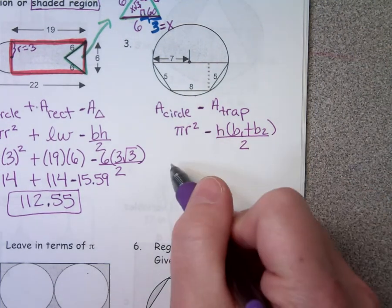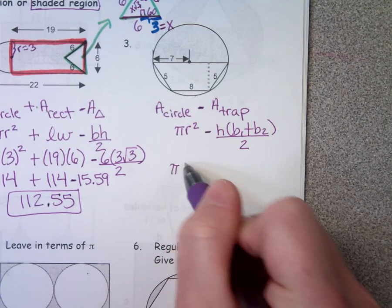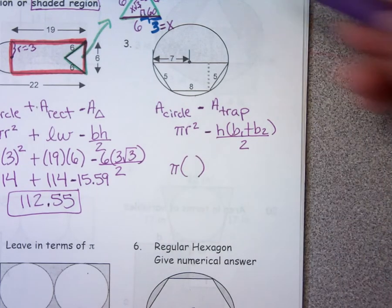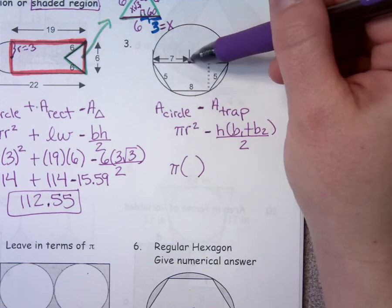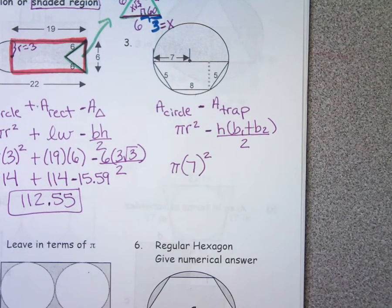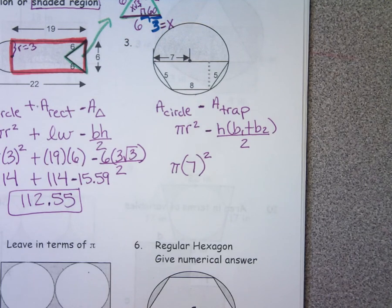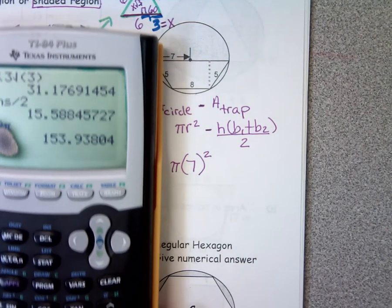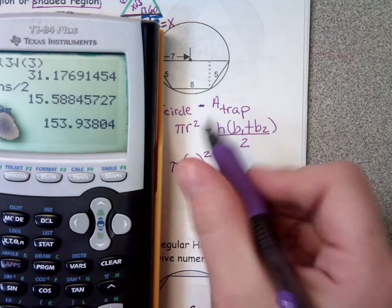This is me showing work — what I'd love to see from everybody. When you find the area of this circle, what's the radius? Seven is the distance from the center to an edge, so seven is the radius. Let's put that in your calculator — pi times seven squared, rounded to the nearest hundredth. It's 153.94.